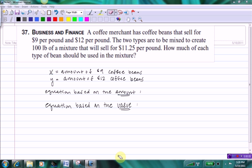This type of problem is a type of problem that we commonly refer to as a mixture problem. And it reads, a coffee merchant has coffee beans that sell for $9 per pound and $12 per pound. The two types are to be mixed together to create 100 pounds of a mixture that will sell for $11.25 per pound. How much of each type of bean should be used in the mixture?